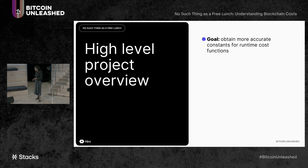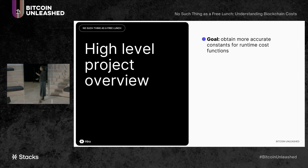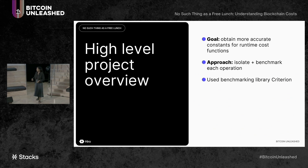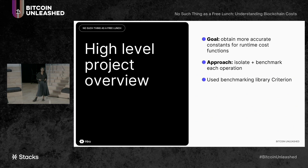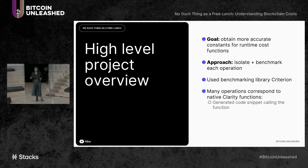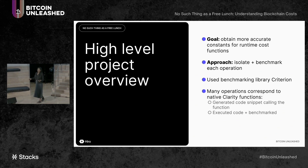Our goal was to obtain more accurate constants for runtime cost functions than the version released with the Stacks 2.0 launch, cost.clar. Our approach was to isolate and benchmark each Clarity operation. To do so, we used the statistics-driven benchmarking library Criterion, which is implemented in Rust. Many operations correspond to native Clarity functions. For these, it was a straightforward approach: we generated a code snippet that called that Clarity function, executed the code, and benchmarked the result.